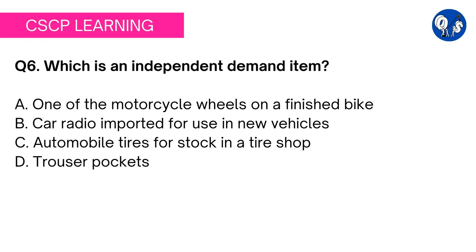Option C: automobile tires for stock in a tire shop. It is specifically mentioned that automobile tires are ordered for stock in a tire shop, which means the tires will be sold separately as a finished product. Therefore tires have an independent demand — this is the right answer. If this option had stated that tires are imported for new vehicles, these tires would fall under dependent demand. Since tires are procured for a tire shop, it is an independent demand item. Consider yourself a tire shop owner — tires are the finished product for you.